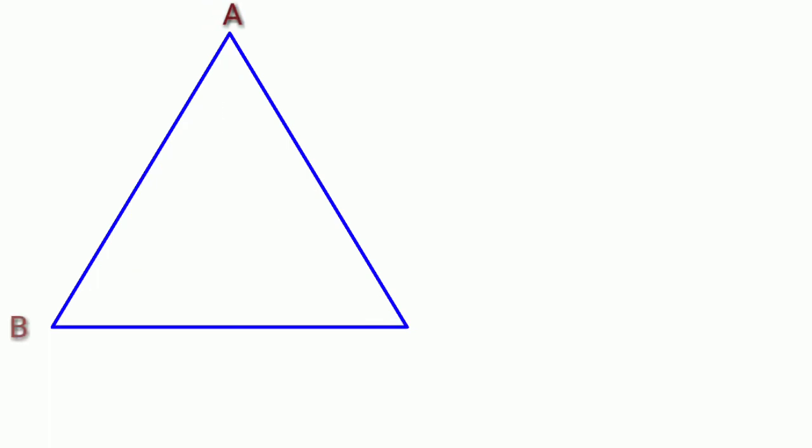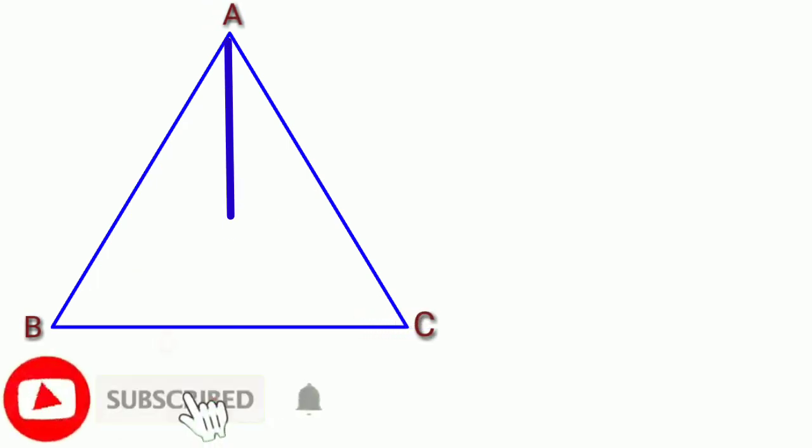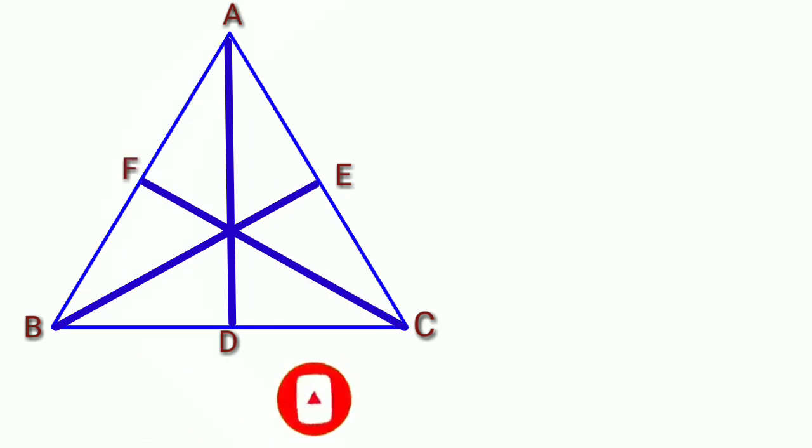If we take a triangle ABC, here AD, BE and CF are the three medians.